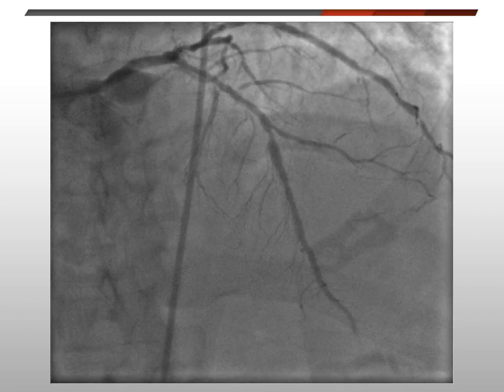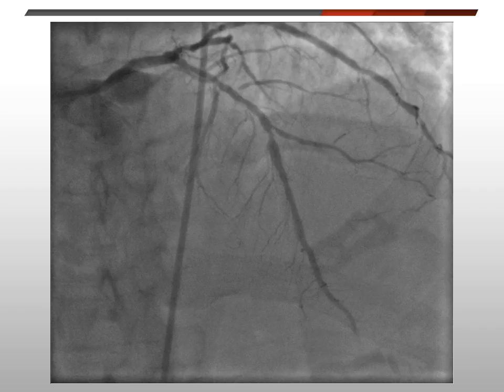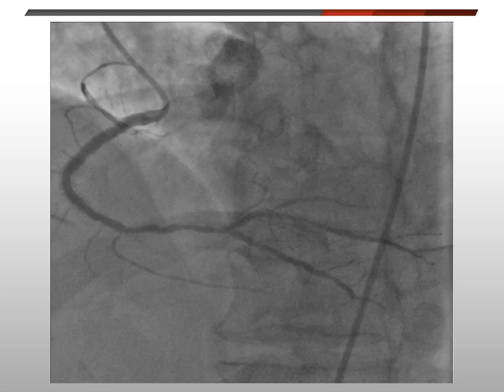The left anterior descending artery had diffuse mild atherosclerosis in the proximal segment, in the range of 40 to 50%. There are two diagonal branches which are very small caliber. The diagonal 2 branch had about 99% stenosis at the ostium. The mid-distal LAD had about 50% in-stent restenosis involving the bifurcation of the D3 branch, and the D3 ostium had about 50% stenosis. The right coronary artery had about 20% in-stent restenosis in the mid-segment and diffuse mild atherosclerosis of 40 to 50% in the distal segment.